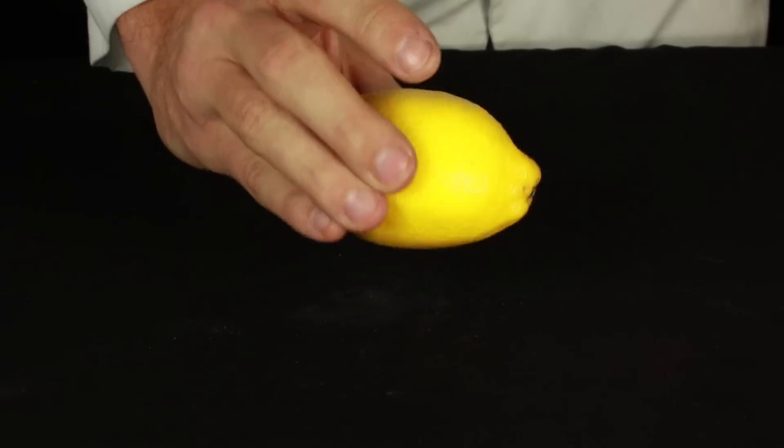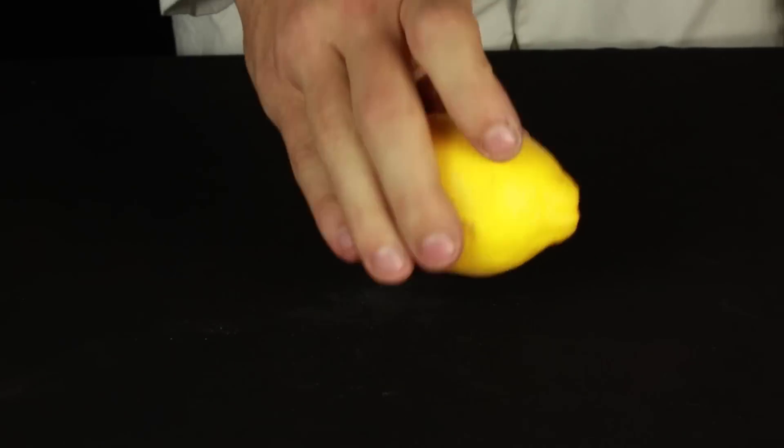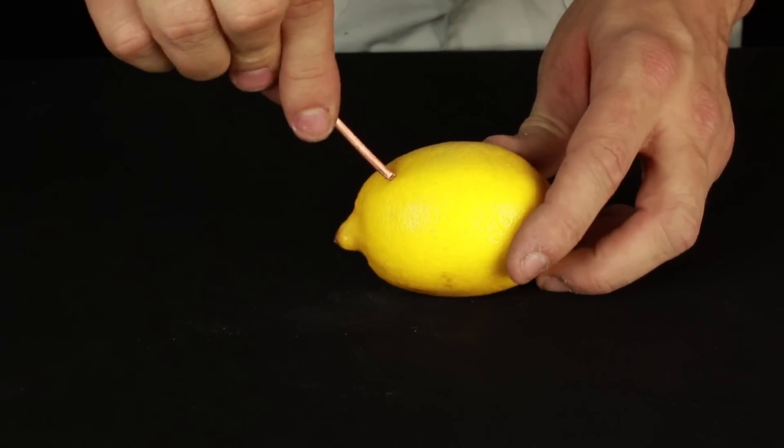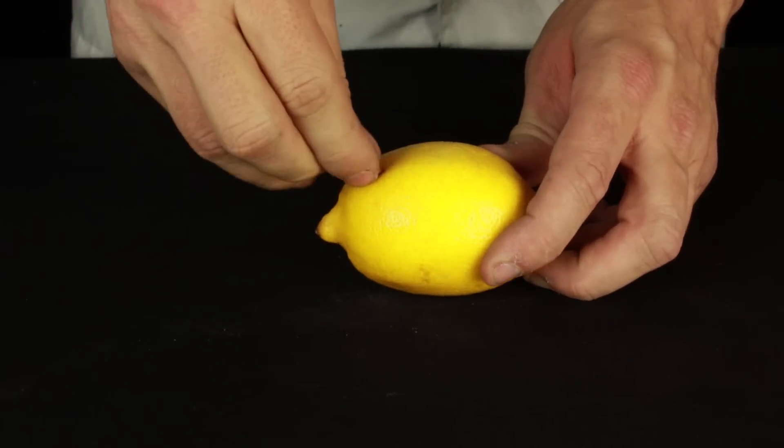Now take a lemon and roll it around on the table to break open the juice compartments contained inside. Now take the copper wire and the zinc nail and push it into opposite ends of the lemon.